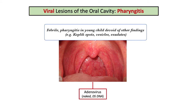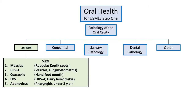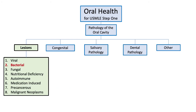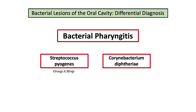But viruses aren't the only pathogens that can cause pharyngitis. These are the five important viral infections to be familiar with in oral health — each has a distinctive pattern with distinguishing features and predictable Step 1 derivatives. Let's move on to bacterial causes of oral lesions and specifically bacterial causes of pharyngitis. We will touch on the two main bacterial causes: Streptococcus pyogenes, also known as Group A Strep, and Corynebacterium diphtheriae.